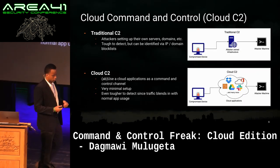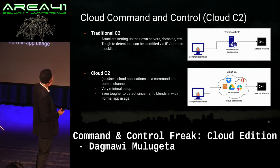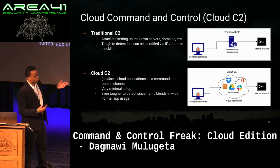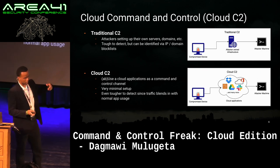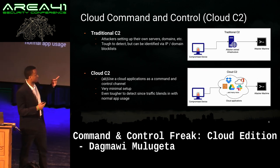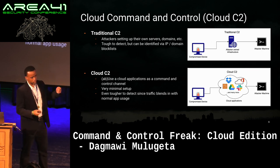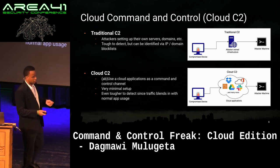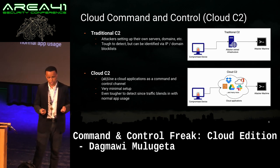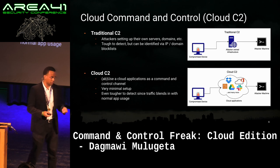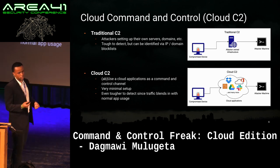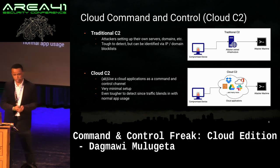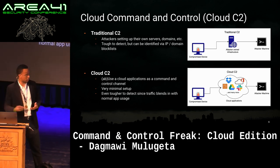So what is cloud C2? Well, traditionally attackers have been setting up their own servers, their own domains, their own hosts as the medium for the compromised device to reach back out to their console. The attacker's console feeds commands back to the compromised device. This has been tough to detect, but the security community has done a very good job of using threat intelligence feeds to identify that sort of infrastructure. A security individual can identify this infrastructure, publish it to a threat intelligence feed, and then other security personnel can consume this feed and prevent communication to that infrastructure.